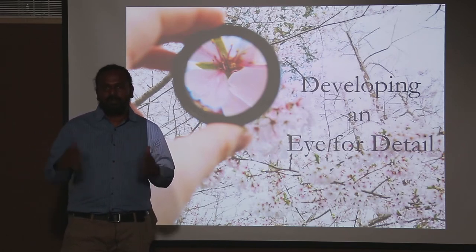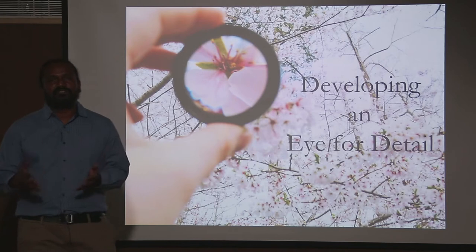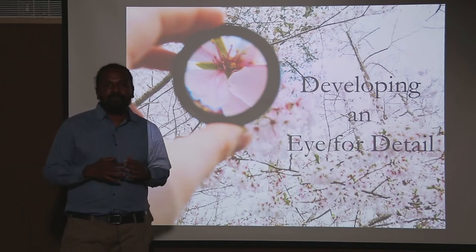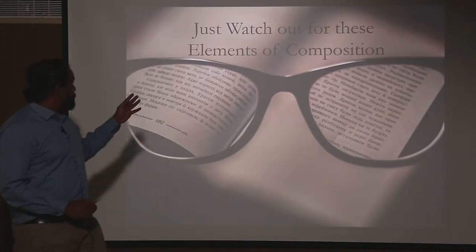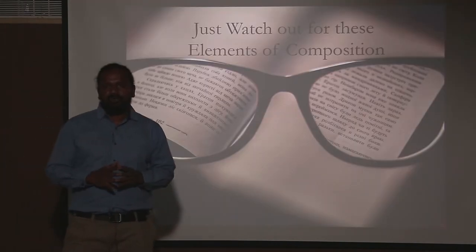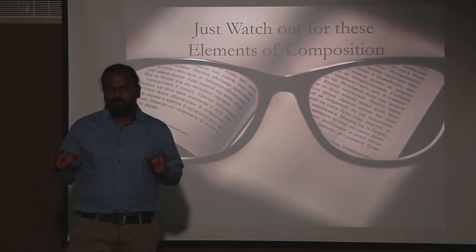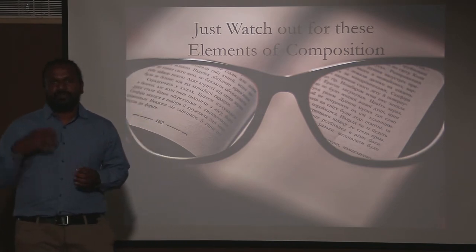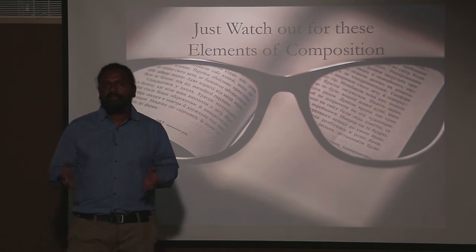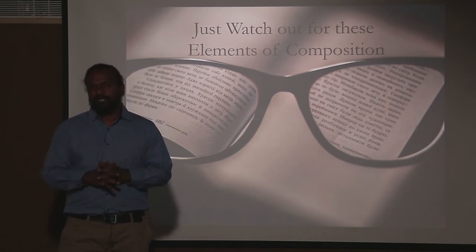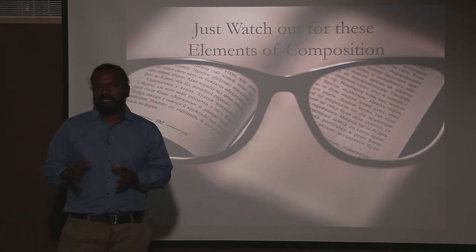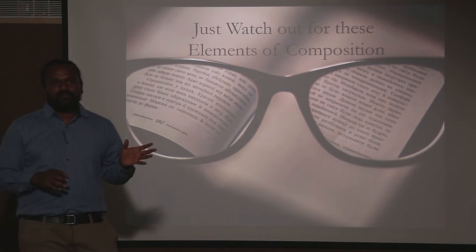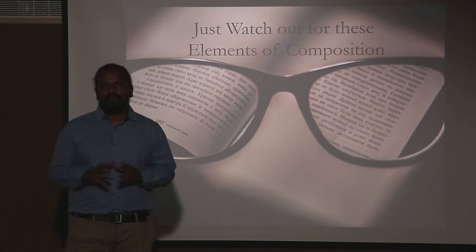There are many ways in which a budding photographer, a person who is interested in photography, can develop their eye for detail. All they have to do is look out for the elements of composition. There are various elements of composition which can be used for photography to make the picture look good. Today we will be dealing with patterns and lines — all you have to do is look out for these elements.